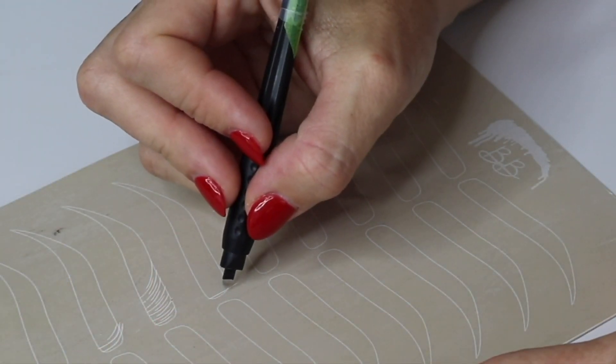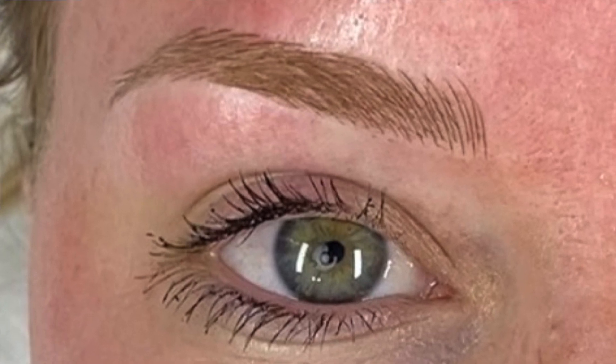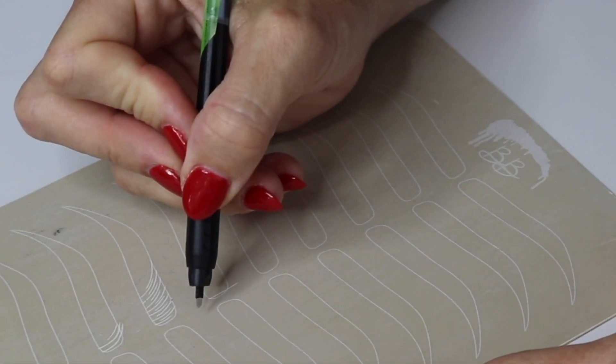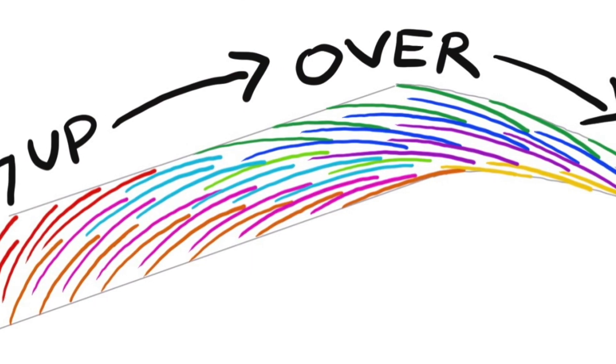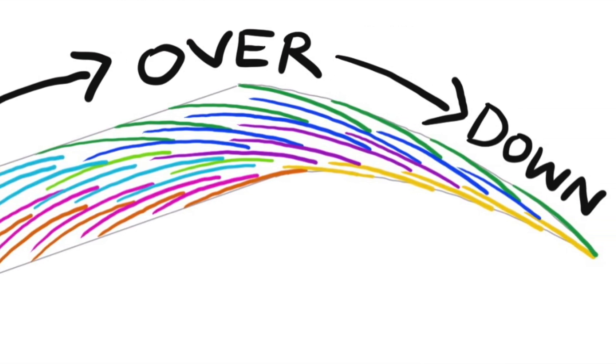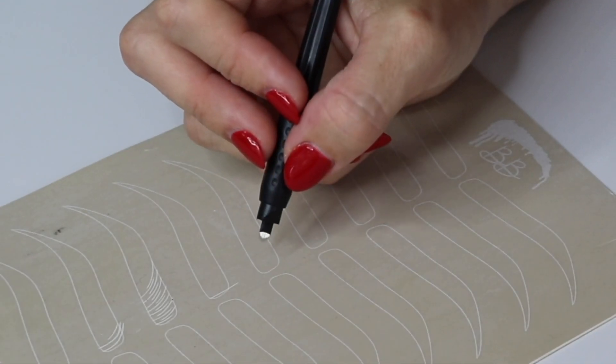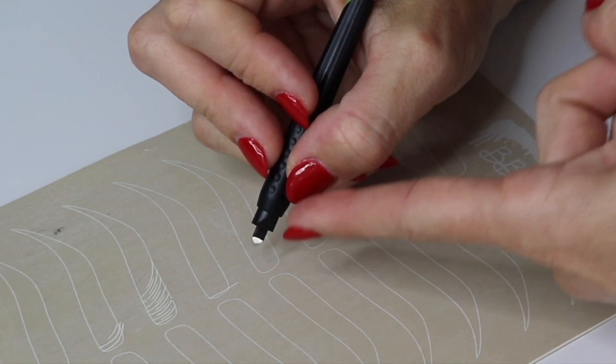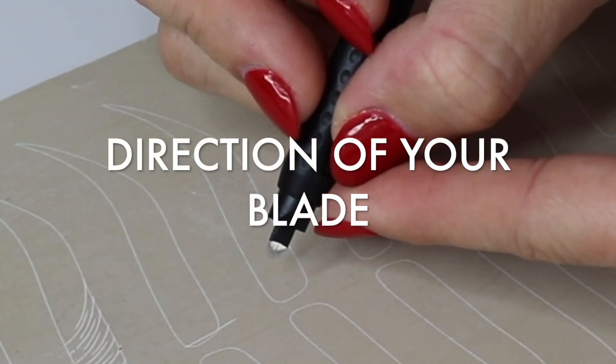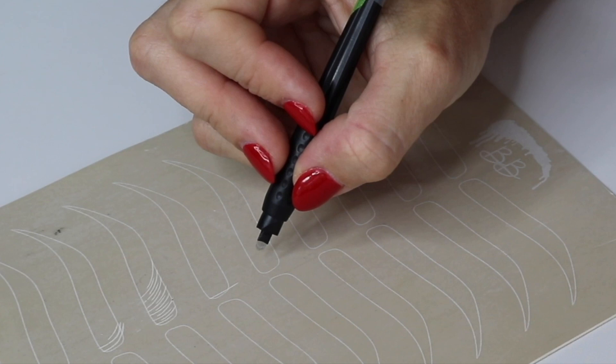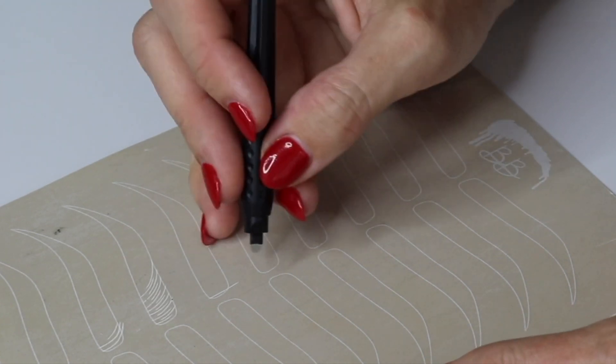The problem is we want our strokes to mimic hair growth and traditionally hair growth is going to move up and over and then over and down or over and out. A super easy way to fix this is pay attention to the direction of your blade. I can't stress enough how important this is.